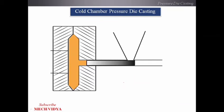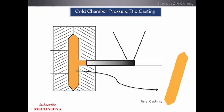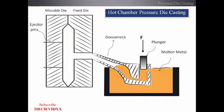As shown in this diagram, you can see what happens when the molten metal is squeezed into the mold cavity with the help of the plunger. In this way we get our final casting.